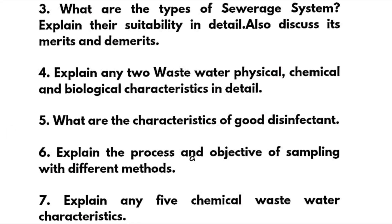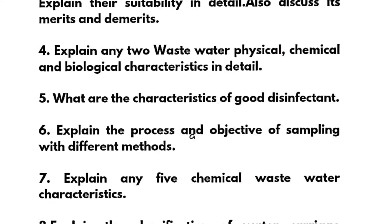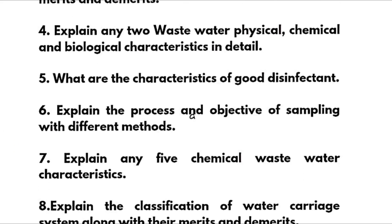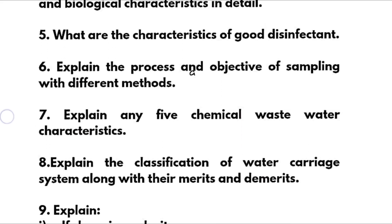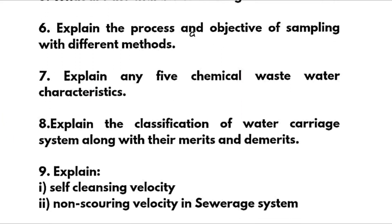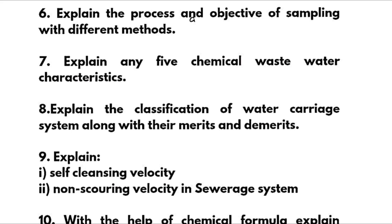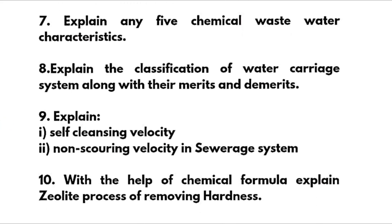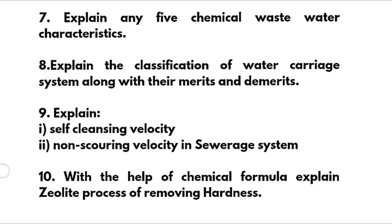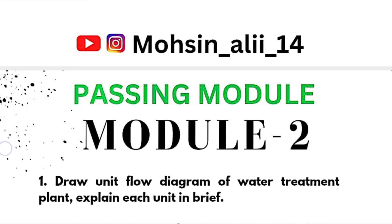Explain any two wastewater physical, chemical, and biological characteristics in detail. What are the characteristics of a good disinfectant? Explain the process and objective of sampling with different methods. Explain any five chemical wastewater characteristics. Explain the classification of water carriage systems along with their merits and demerits. Explain self-cleansing velocity and scouring velocity in sewage systems with chemical formula. Explain the zeolite process of removing hardness.